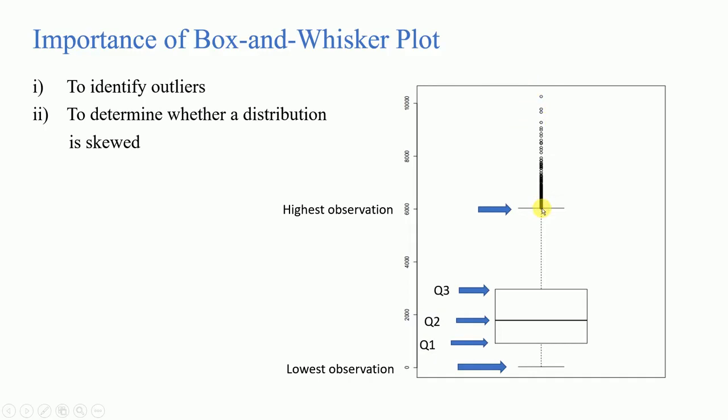Above the highest observation we can see some observations present. These are nothing but outliers or extreme value observations that we discussed previously. We can understand the presence of outliers by using this box and whiskers plot. This box and whiskers plot is popularly used for identifying and removing outliers.